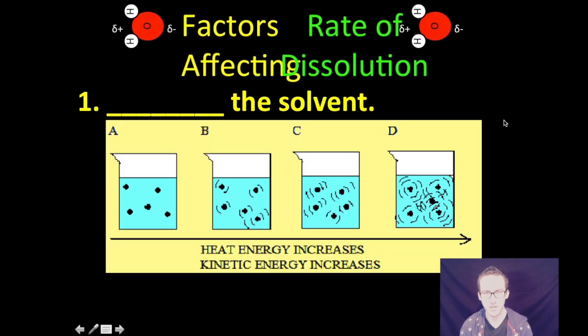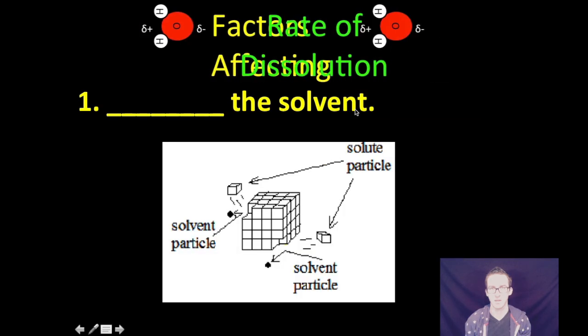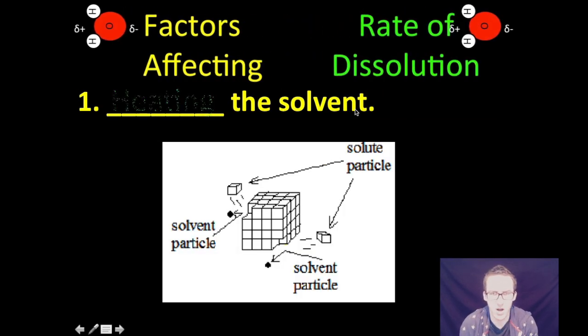Okay, so the first factor that we're gonna talk about that affects the rate of dissolution is heating your solvent. You need to remember that temperature is essentially a measure of kinetic energy. So the hotter that you get your solvent, the more kinetic energy or energy of motion that your solvent molecules have. As you think about what that means on the particulate level, your solvent particles are able to dissolve your solute more quickly because they have more kinetic energy.